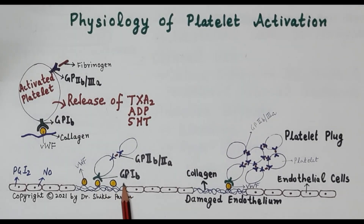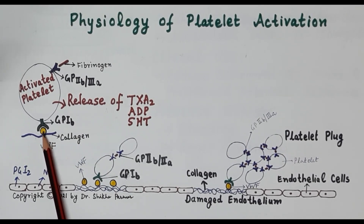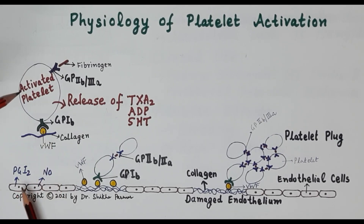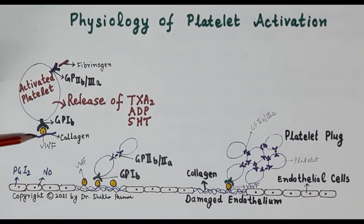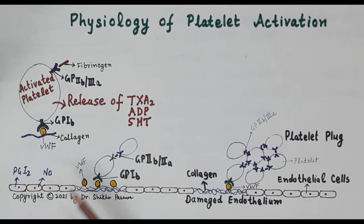As clearly shown in this diagram, collagen and von Willebrand factor released by the damaged endothelium bind to the activated platelet through the GP1b receptor, resulting in further activation of the platelets.